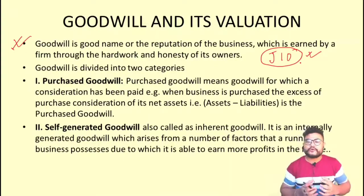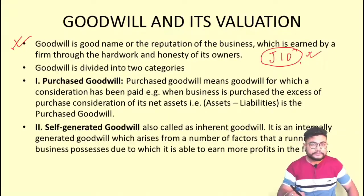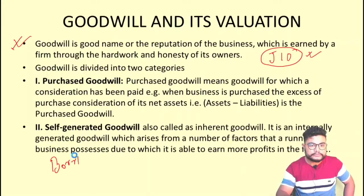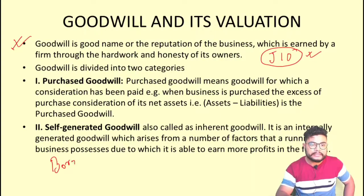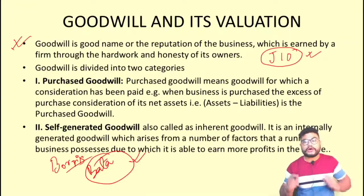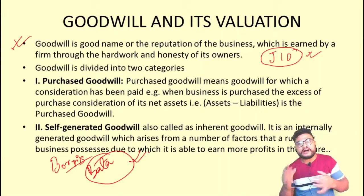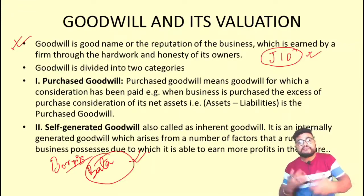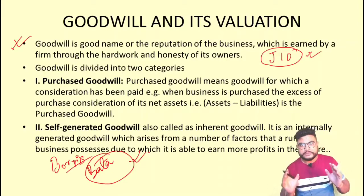Self-generated goodwill, also called inherent goodwill, is built through hard work and quality. For example, when we hear the name Bata, we immediately know it sells good quality shoes, chappals, and sandals. They have self-generated this goodwill by doing hard work and delivering quality products.